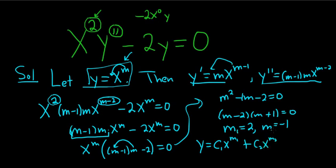So we can think of this as m1 and this as m2. So in this case, we have distinct real roots. So the final answer would be c1 times x squared plus c2 times x to the negative 1. And that would be the solution to the differential equation.